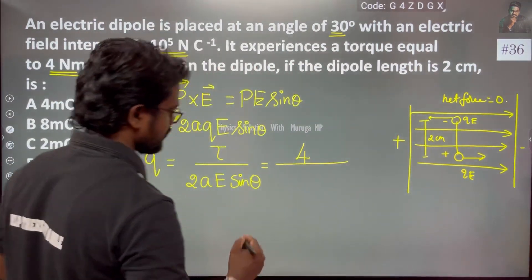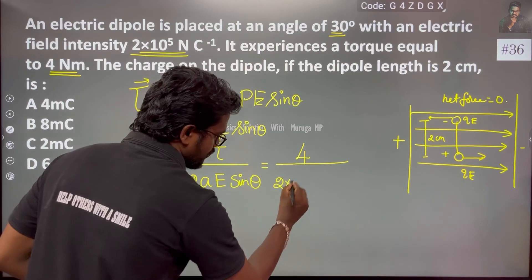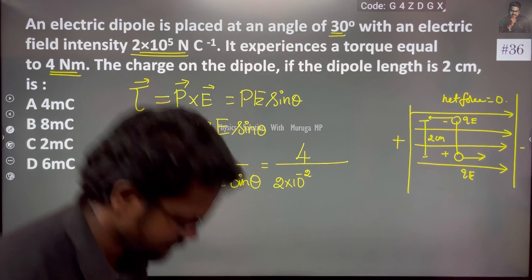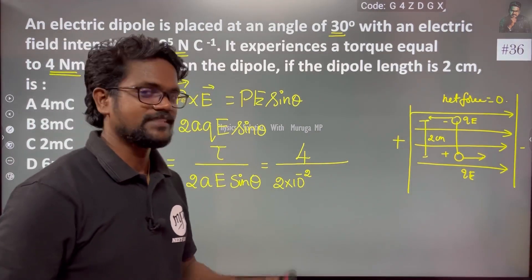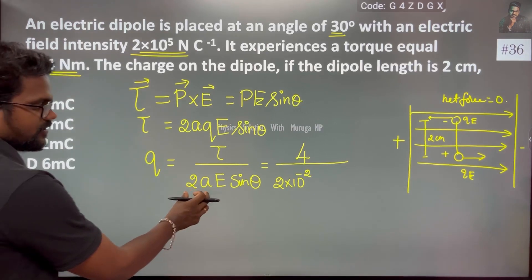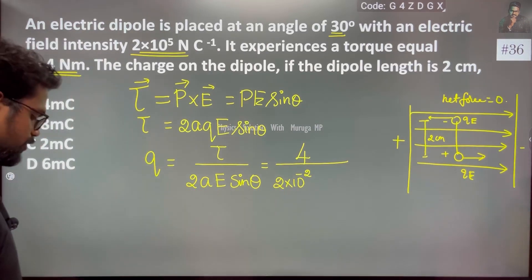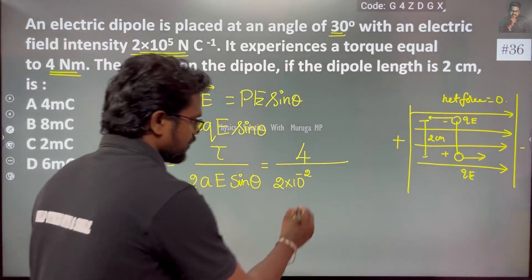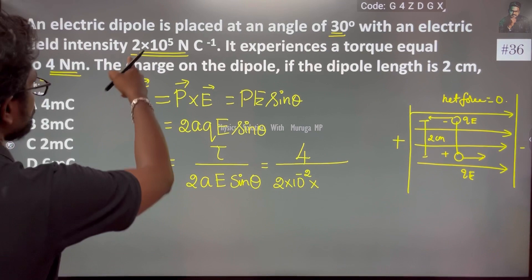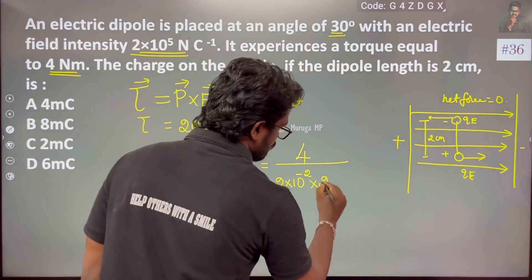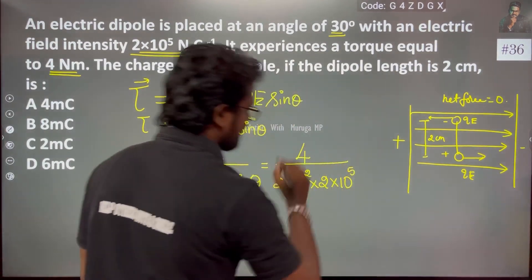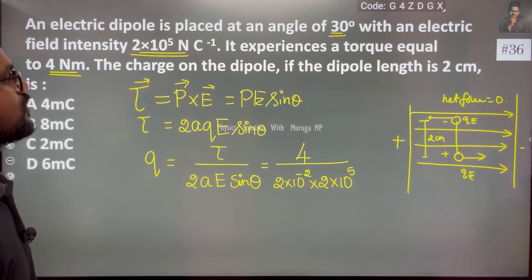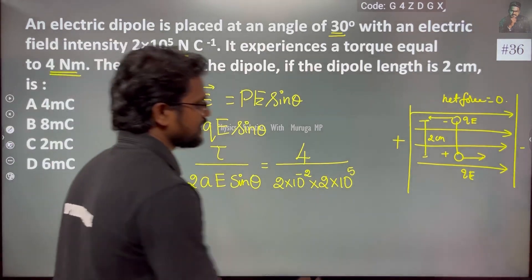The dipole length 2A is 2 into 10 to the power minus 2. E stands for electric field, which is 2 into 10 to the power 5. Sin theta — theta is 30 degrees, so sin 30 degrees is 1 by 2.